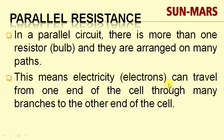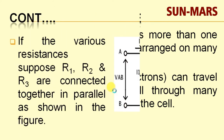This means the electricity or electrons can travel from one end of the cell through many branches to the other end. All connections — positive or negative, phase or neutral — are connected, and the current is divided among the branches. You can divide the current into two parts, or six parts, or three paths. The current flows from the battery through three branches.